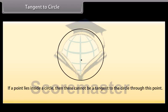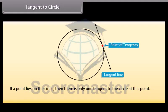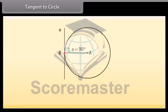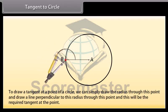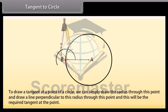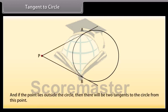Tangent to a circle: if a point lies inside a circle, then there cannot be a tangent to the circle through this point. If a point lies on the circle, then there is only one tangent to the circle at this point, and the tangent is perpendicular to the radius through this point. Therefore, to draw a tangent at a point of a circle, we simply draw the radius through this point and draw a line perpendicular to this radius — this will be the required tangent. If the point lies outside the circle, then there will be two tangents to the circle from this point.